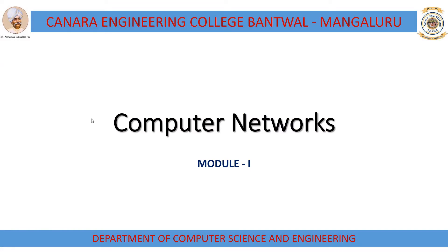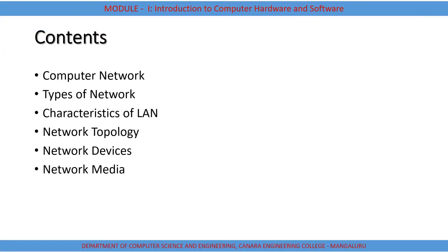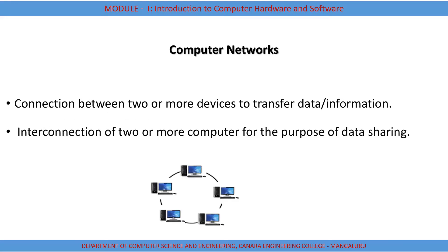We are going to see computer networks as part of module 1. The topics we will cover in this session are: computer networks, what exactly is a computer network, types of networks, characteristics of a network, network topology, network devices, and network media. A computer network can be defined as a connection between two or more devices to transfer data or information, or as the interconnection of two or more computers for the purpose of data sharing.